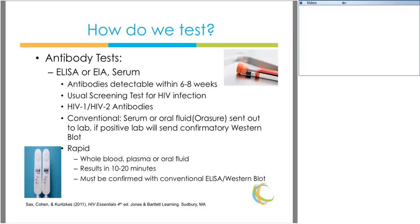The conventional test can use serum or oral fluid, typically sent to a lab. If the lab detects HIV antibodies, it will send a Western blot, which serves as a confirmatory test for the preliminary positive antibody test. Antibody tests are also available as rapid tests using whole blood, plasma, or oral fluid, with results returned in about 10 to 20 minutes. If you have a positive rapid test in the clinic, you must send the sample out for a confirmatory ELISA and Western blot.